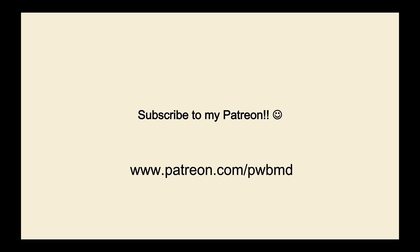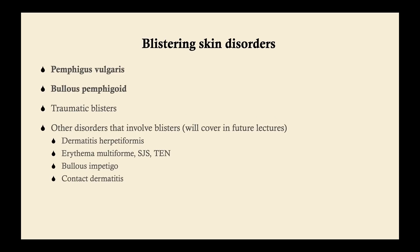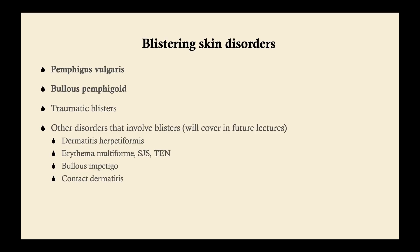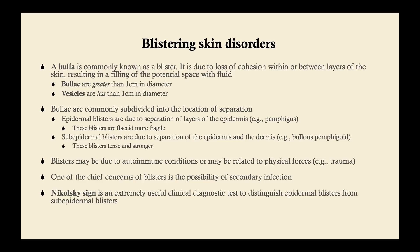We're going to talk about two blistering skin disorders: pemphigus vulgaris and bullous pemphigoid. We'll briefly talk about traumatic blisters, certainly the most common cause of blisters. There are some other disorders that involve blisters but they'll be covered in future lectures. Blistering skin disorders involve blisters — the medical name for a blister is a bulla, plural bullae. It's due to a loss of cohesion either within a layer of the epidermis or between layers of the skin, resulting in filling of a potential space with fluid. Bullae are greater than one centimeter in diameter, whereas vesicles are the same pathologic process but less than one centimeter.